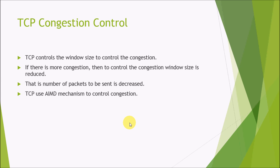Now we will move to TCP congestion control. TCP controls the congestion by adjusting the window size. If there is more congestion, then it decreases the window size in order to reduce the packets to be sent, and hence the congestion is controlled or the load on the network is decreased.